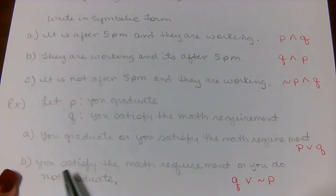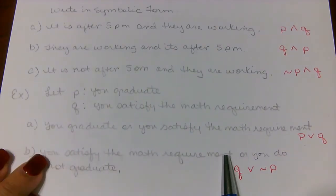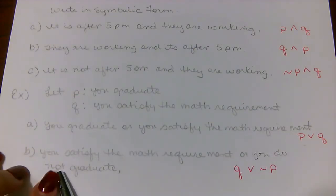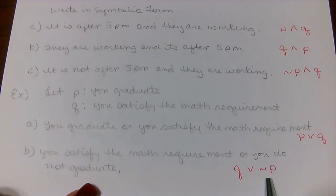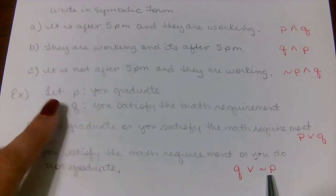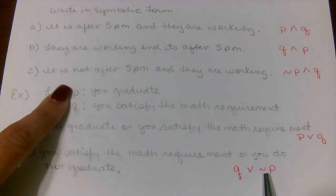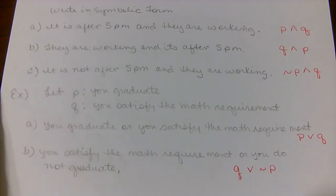For part B, it says you satisfy the math requirement — that's Q — so Q goes first, then the 'or' symbol, then you do not graduate. This 'not' is represented by the squiggly line, and then the statement P. So here it's 'not P,' giving us Q ∨ ¬P.